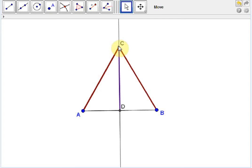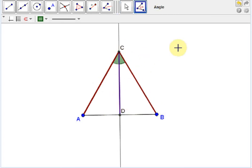Therefore, the angles ACD and BCD are equal. Now, these triangles are congruent by the side-angle-side theorem.